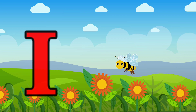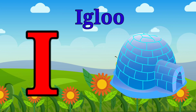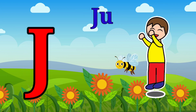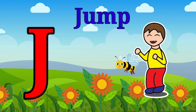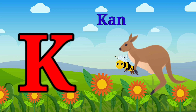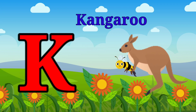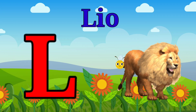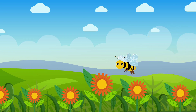I is for igloo, i-i-igloo. J is for jump, j-j-jump. K is for kangaroo, k-k-kangaroo. L is for lion, l-l-lion.